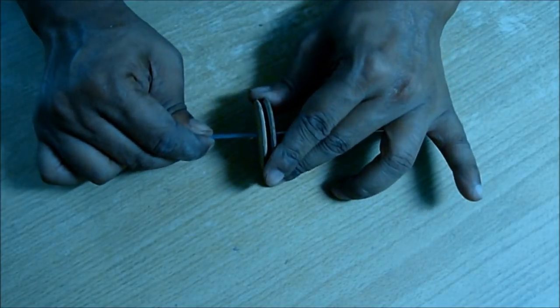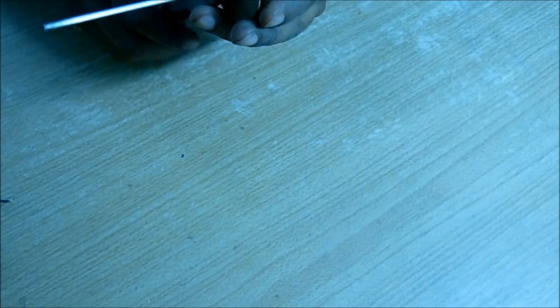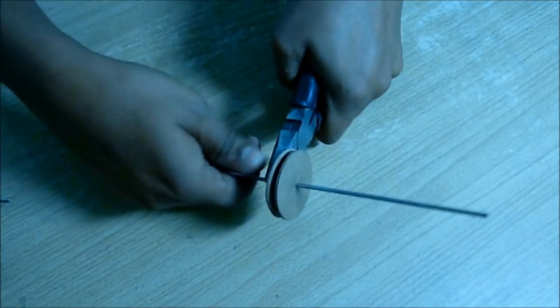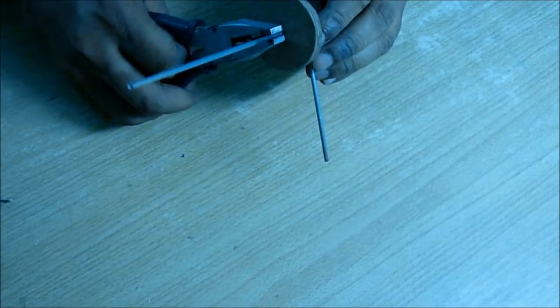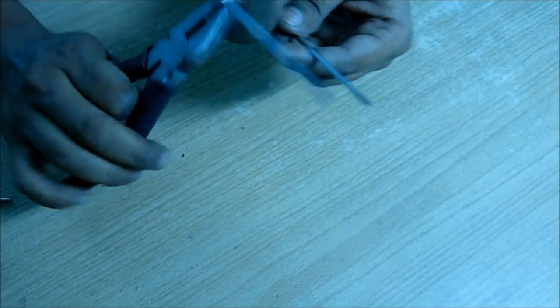Put some super glue and push the pulley to have a tight fitting. Now using a plier, bend this shaft on both sides and make a U shape.